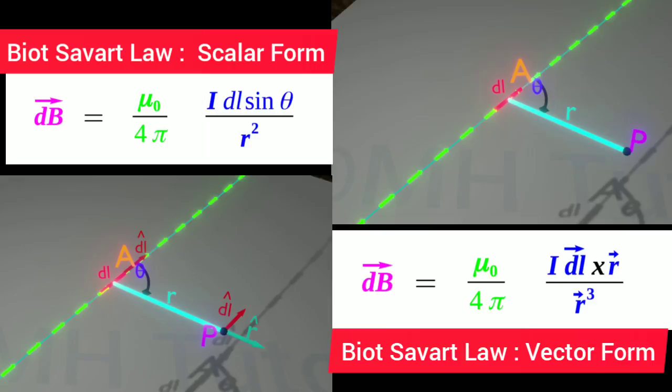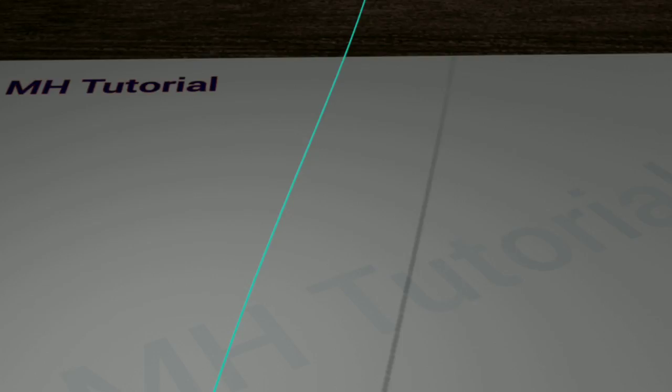To build a realistic concept on Biot-Savart law, let us first imagine a wire. It carries a current of amount I. Also, imagine a point P near the wire. All portions of the wire have their contributions in generating a magnetic field at this point P.